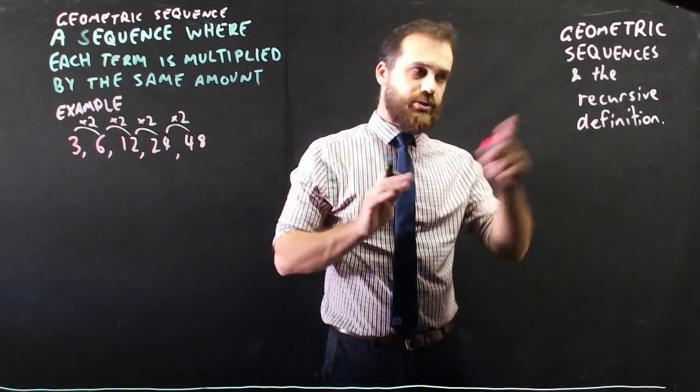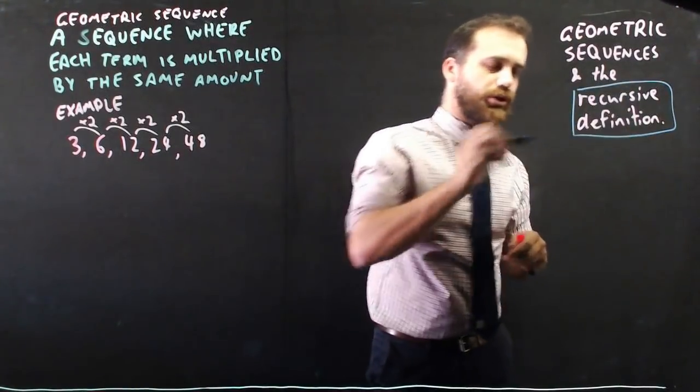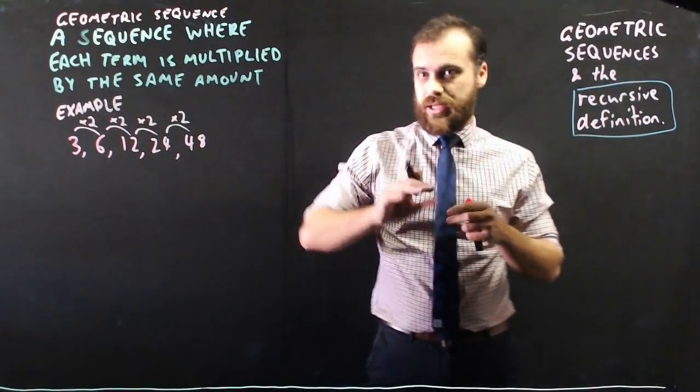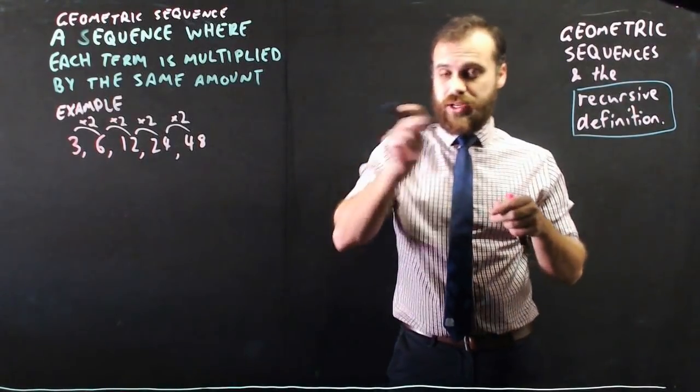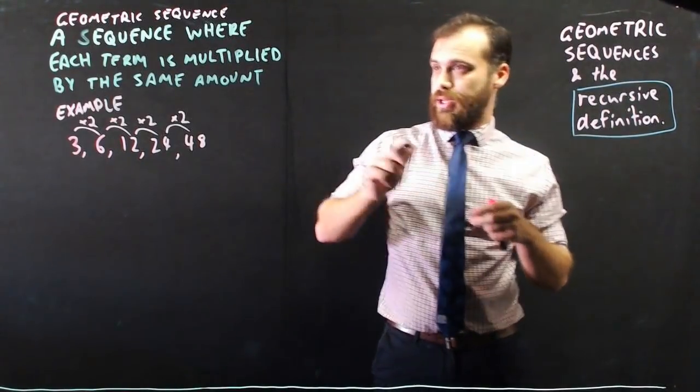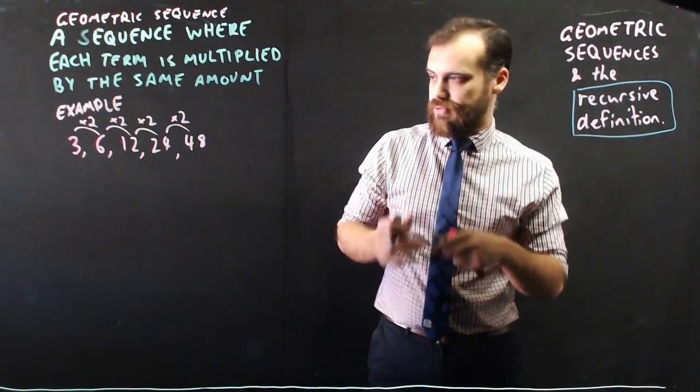What we're going to talk about here is the recursive definition or the recursive formula. That is, if we know one term we can find out what the next term is. So, two ways to write this formula.